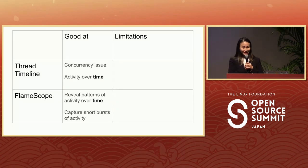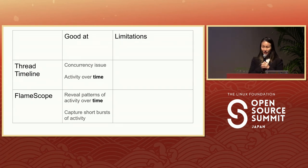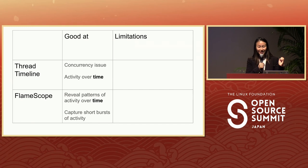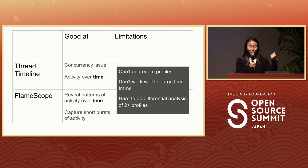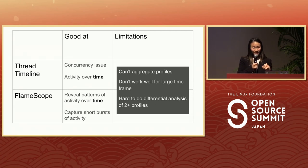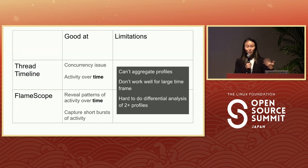Thread timeline and flame scope both have the time component, and therefore they're great at showing activity over time and patterns of activity over time. But because of this time component, they have the same limitations as the flame chart: you cannot aggregate profiles, it does not work well for large time frames, and it's hard to do differential analysis with two or more profiles.